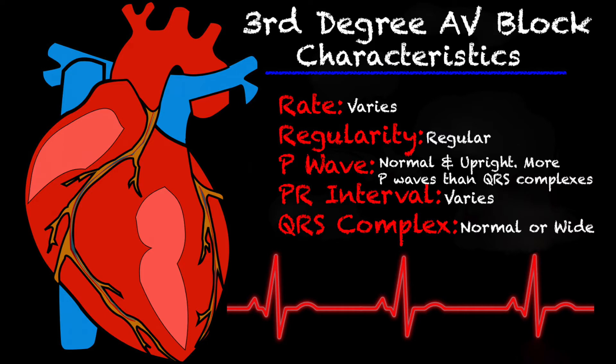The P waves are normal and upright, but there are more P waves than there are QRS complexes — just like second degree type 2, which also has more P waves than QRS complexes. I'll link that video in the right-hand corner. For your PR interval, there really isn't a PR interval because there is no association between the P waves and the QRS complexes. Your QRS complexes typically are normal but can also be wide. Your P-to-P intervals tend to be normal and your QRS-to-QRS complexes also tend to march out. That is one distinct characteristic of third degree complete heart blocks that second degree type 2 does not have.